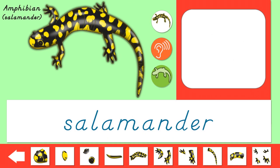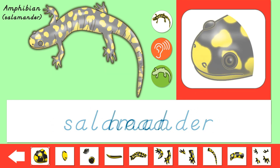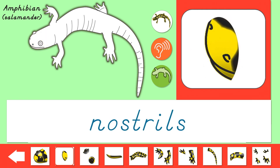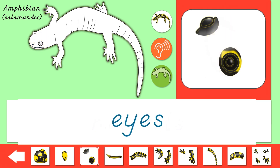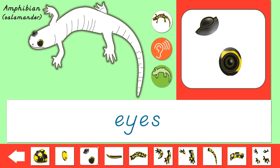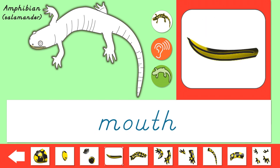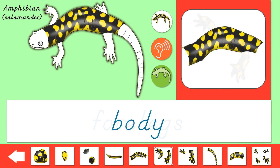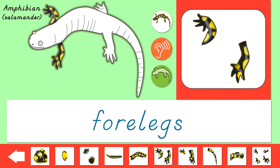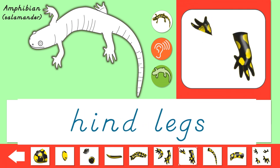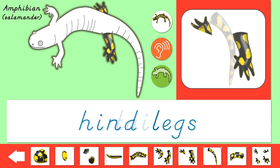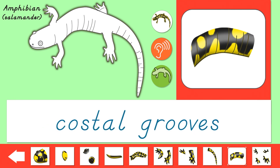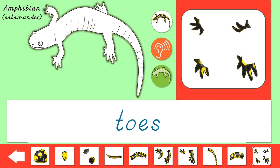Let's learn the parts of a salamander. Head, nostrils, eyes, mouth, body, forelegs, hindlegs, tail, costal grooves, toes.